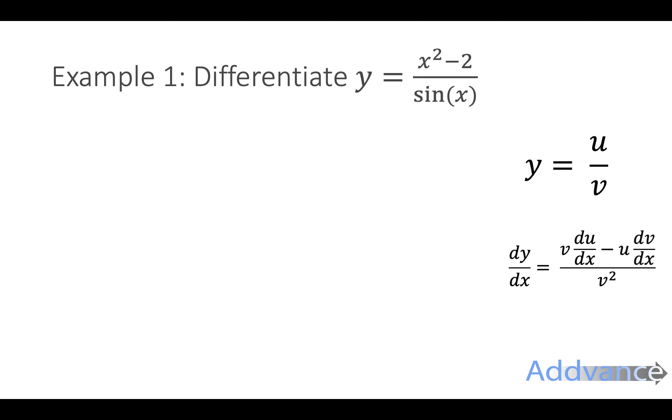Now that's an example. So we're going to differentiate y equals x squared minus 2 over sine of x. And we've got the u is x squared minus 2, the v is sine of x. We're just taking the u and the v from the top and the bottom of the quotient.